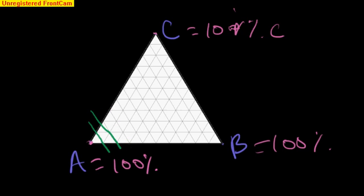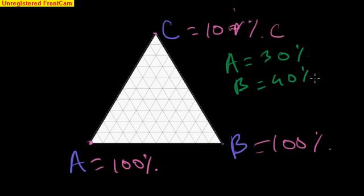So the point of intersection of all these three compositions will represent the concentration at that particular point. So let us take a simple example of a point here. We want to express its composition. So let us take that point P having concentration of A is equal to 30%, B is equal to 40%, and C is remaining, that is 30%.